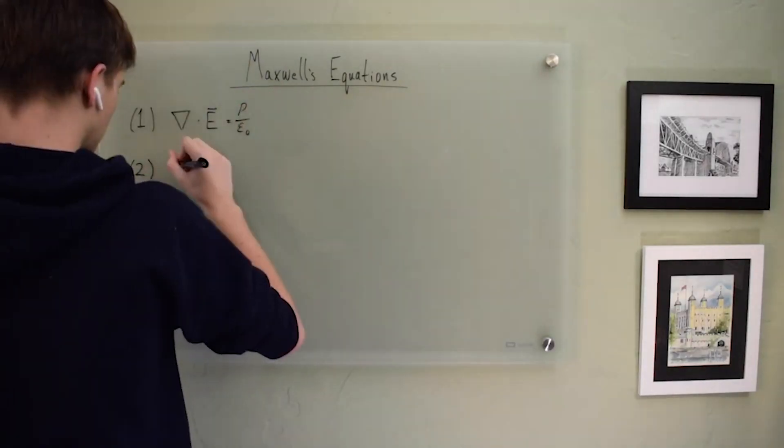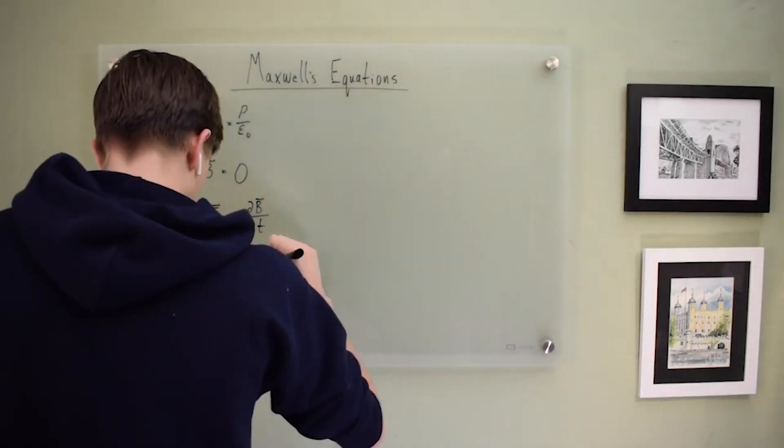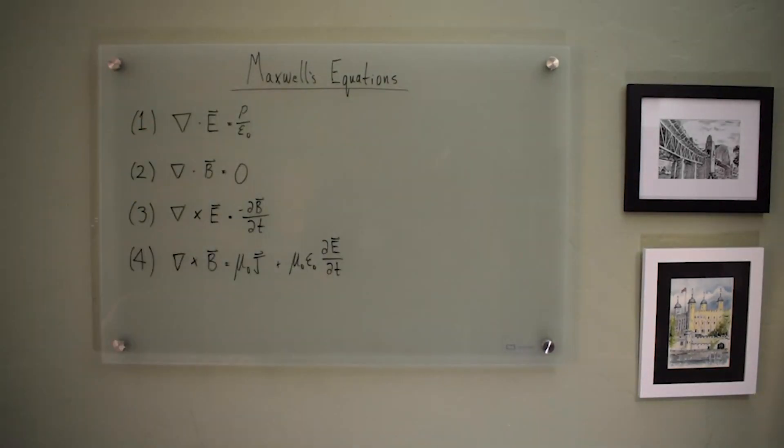So how exactly did we prove that light is an electromagnetic wave? Well first we used Maxwell's equations, which are basically four very important equations that describe electricity, magnetism, and their relationship to each other.